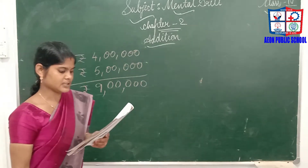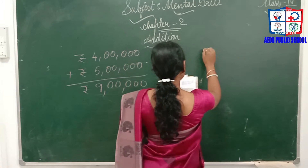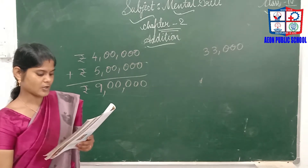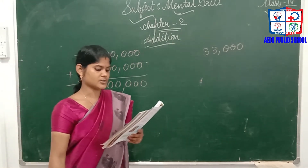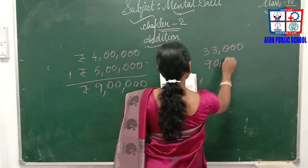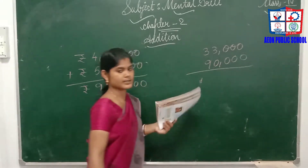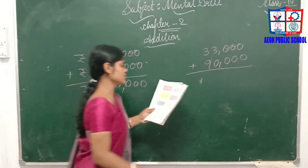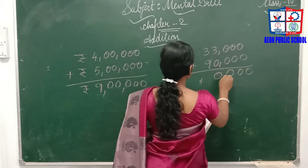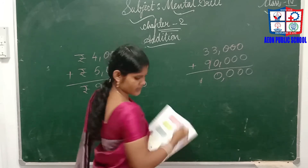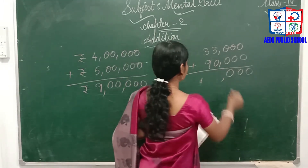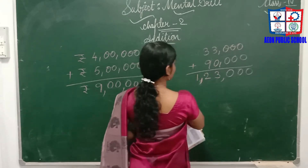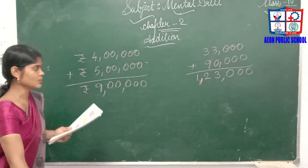Sixth: a stadium has a seating capacity of 33,000 people and Eden Garden has 90,000. What is the total capacity of both stadiums? Adding: 0 plus 0 is 0, 0 plus 0 is 0, 0 plus 0 is 0, 3 plus 0 is 3, 9 plus 3 is 12. So 1,23,000 people can sit in both stadiums.